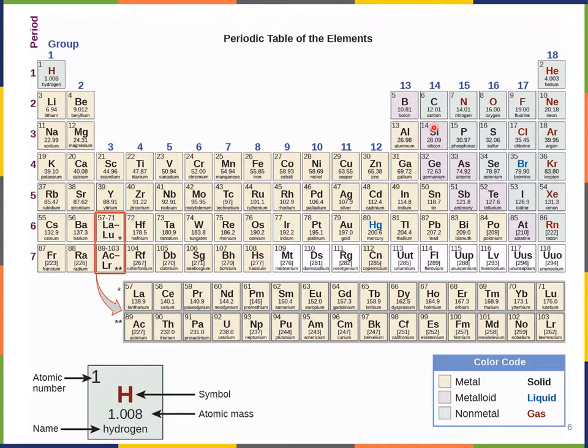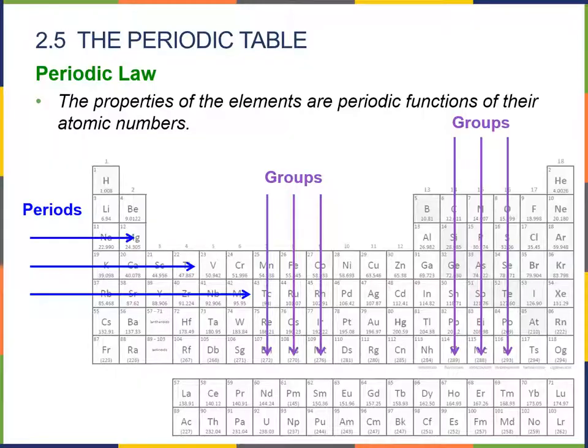So, as we can see here, the elements here all contain a symbol, an atomic mass, an atomic number, and the name of the element. The so-called periodic law says the properties of elements are periodic functions of their atomic numbers. And so, all the elements in one group are going to have similar properties.